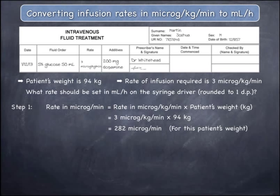In other words, based on this patient's weight of 94 kilograms, an infusion rate of 282 micrograms per minute will deliver the required rate of 3 micrograms per kilogram per minute.